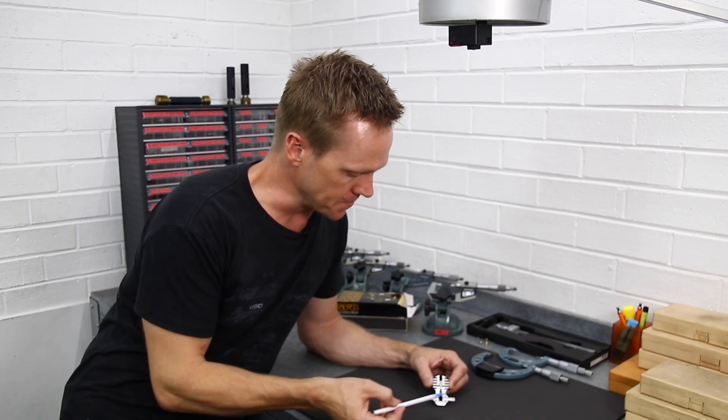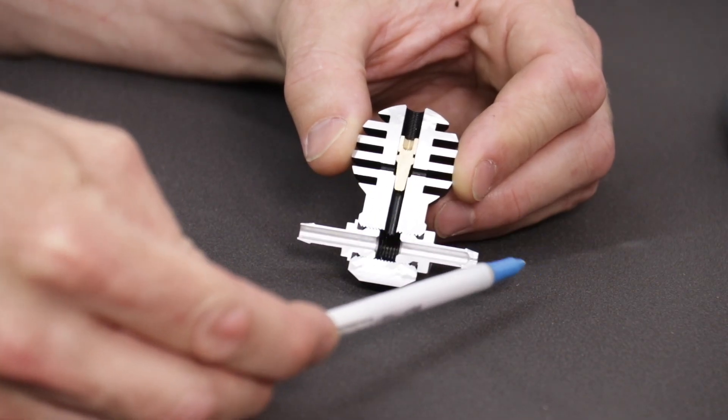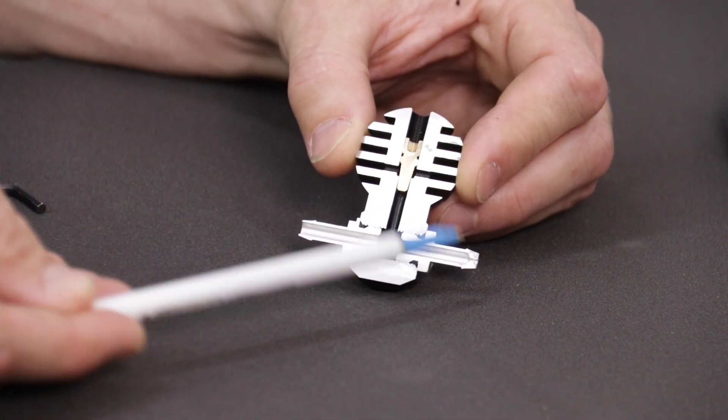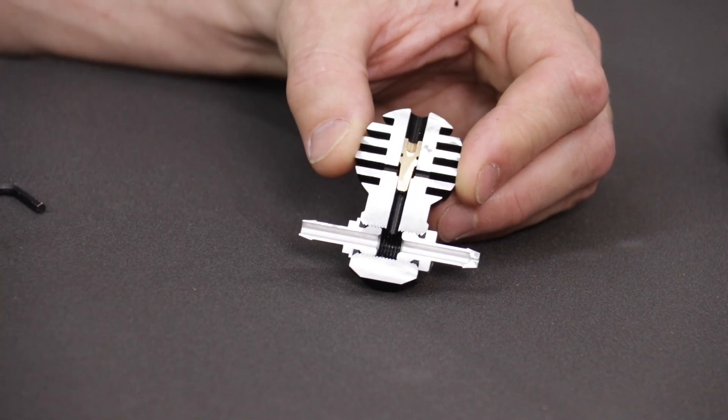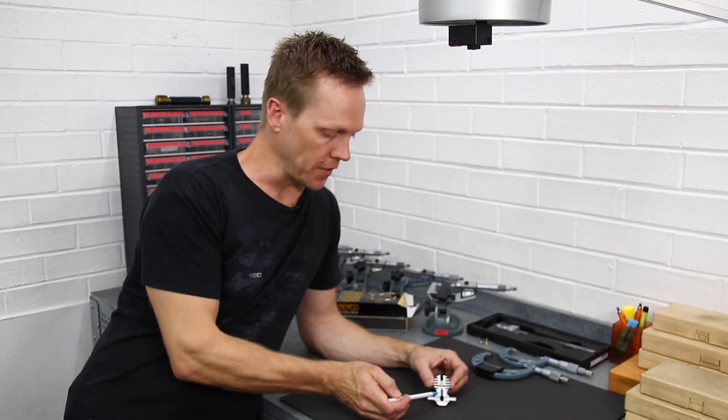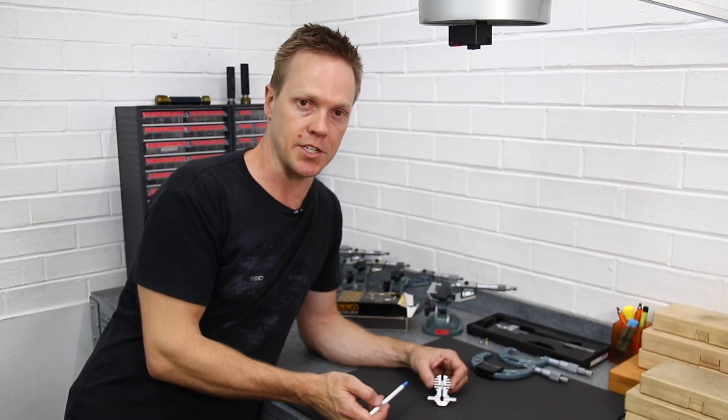So here's what happens. The boost pressure comes in through this nipple here. You can see there's a tiny little restrictor hole just there. Now we'll come back to that purpose later, but at the moment we'll keep going through the overview. On the other side we've got the other nipple that goes to the wastegate actuator.